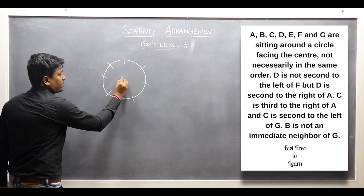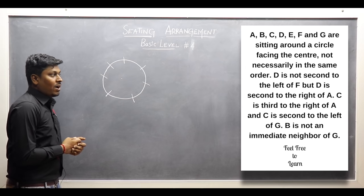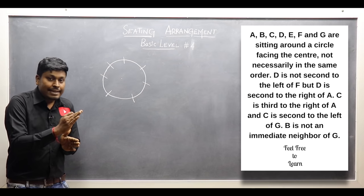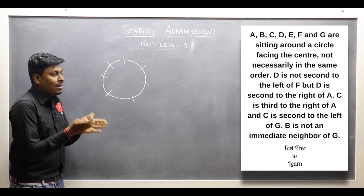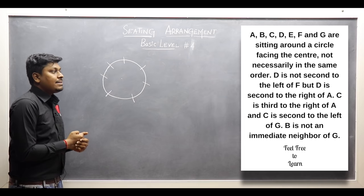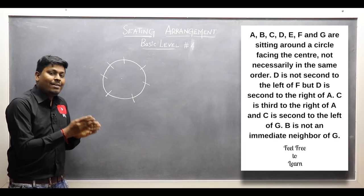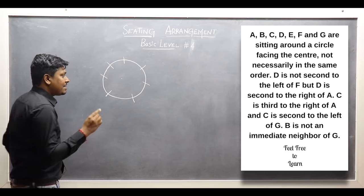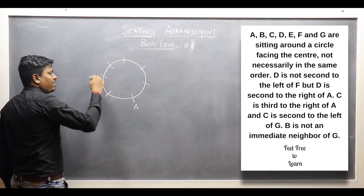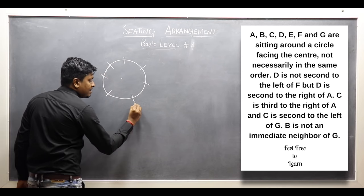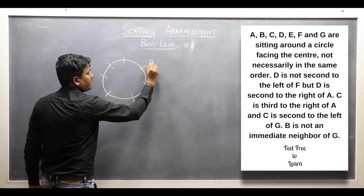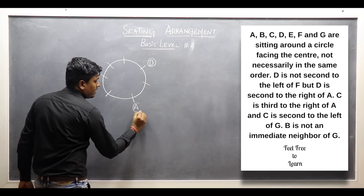First point: D is not second to left of F — so on F's left hand side at the second place, D is not sitting. But D is second to right of A, which means on A's right hand side at the second place, D is sitting. So I can fix A here, and then A's right hand side — one and two — so this is the place for D. I fix both D and A.